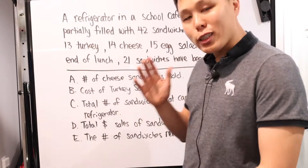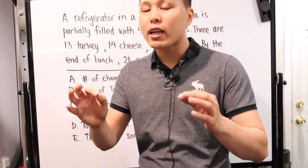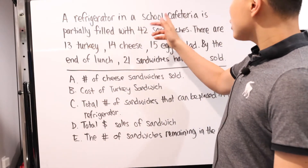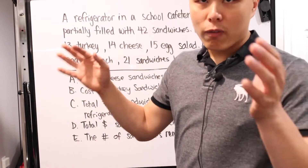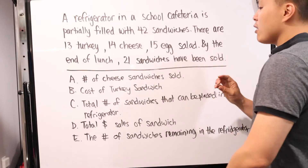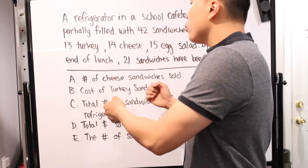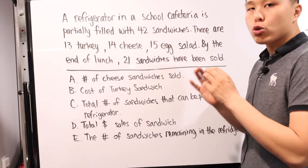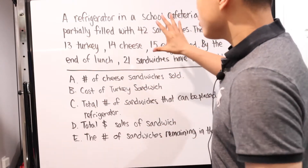So this is problem number 3. A refrigerator in a school cafeteria is partially filled with 42 sandwiches: 13 turkey, 14 cheese, and 15 egg salad. By the end of lunch, 21 sandwiches have been sold. The question explicitly asks which of the following conclusions or statements can we derive from this situation. Don't go out of your way to make any inferences or stretches — only what you can truly derive from what they gave you alone, not from your past experience or your time in a school cafeteria. Just from that, choose the best answer.